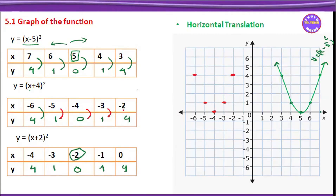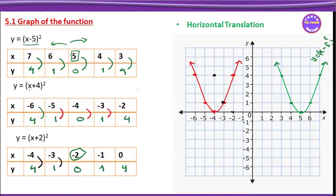Now connect all the points together to form the parabola curve. Minus 3: then minus 4, 4 — minus 4 is the x-value. So minus 4 gives us the point. Then minus 3, 1 — minus 3 with y-value 1, that gives us that point. Then minus 2, 0 — minus 2 is the x-value, 0. Then minus 1, 1 — minus 1 with y-value 1.